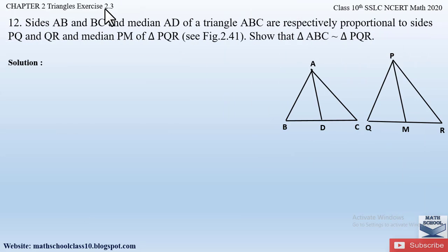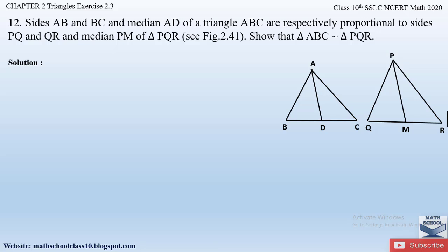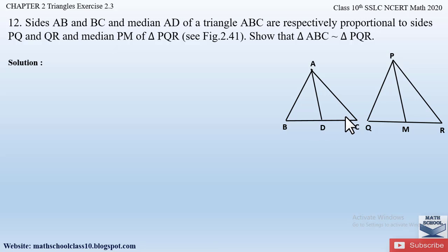Question 12 from Exercise 2.3, Chapter 2 Triangles states: sides AB and BC and the median of triangle ABC are respectively proportional to sides PQ, QR, and median PM of triangle PQR. We need to show that triangle ABC is similar to triangle PQR. They have given us that side AB is proportional to side PQ, side BC is proportional to side QR, and median AD of triangle ABC is proportional to median PM of triangle PQR.